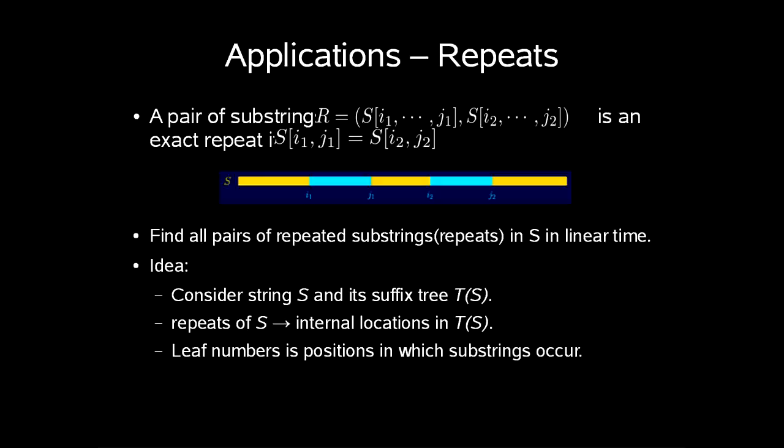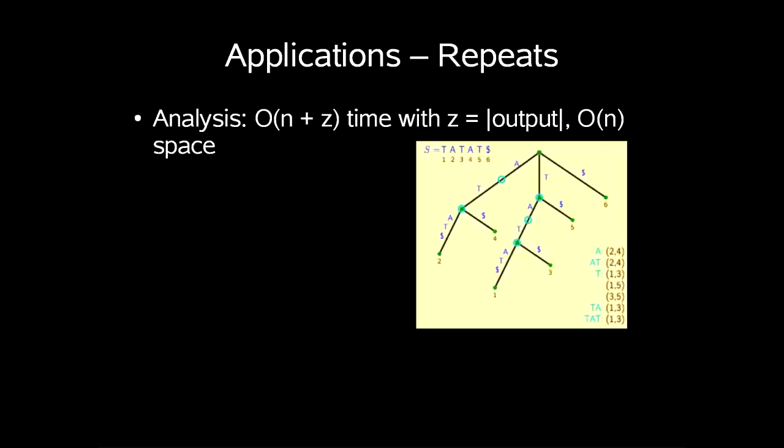So how do we do this? Well, consider the string s and its suffix tree T. Repeated substrings of s correspond to what we call internal locations in T. The leaf numbers tells us positions of where substrings occur. So, say we have this suffix tree, and we want to find all pairs of repeated substrings of the string atat.